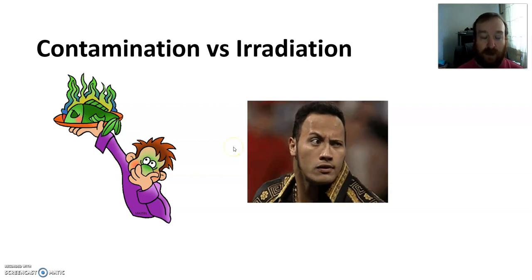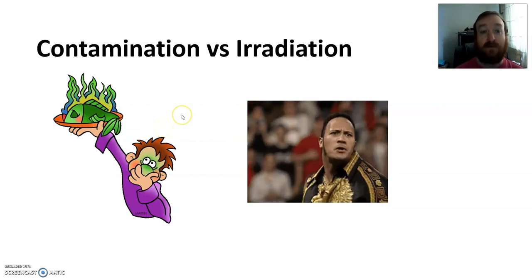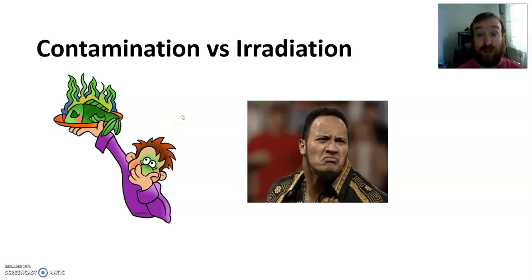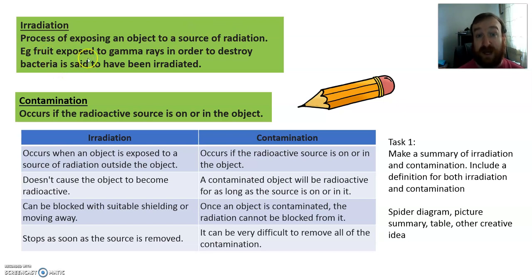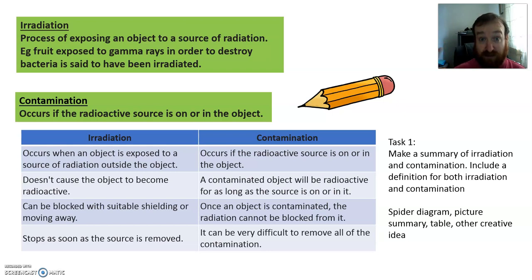In reality we don't really use those words for smells — we use them for nuclear radiation. Irradiation is the process of exposing an object to a source of radiation. For example, fruit is exposed to gamma rays in order to destroy bacteria and it's said to be irradiated. The gamma rays — the actual radiation itself — go into the fruit. The fruit has been irradiated.